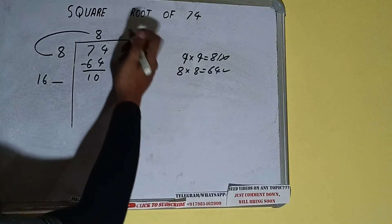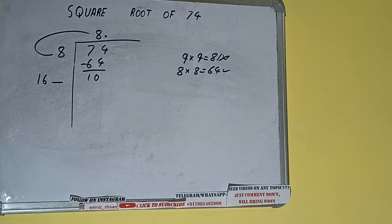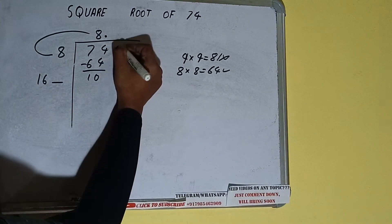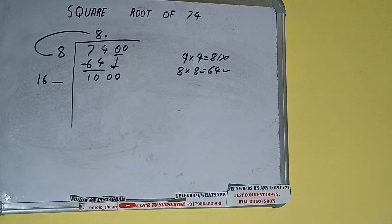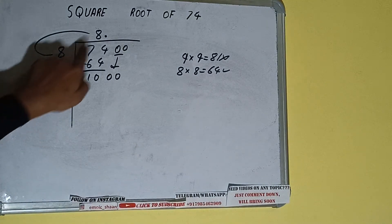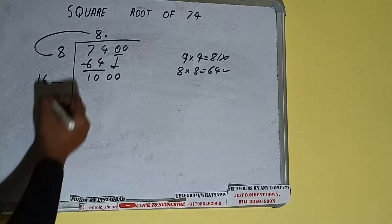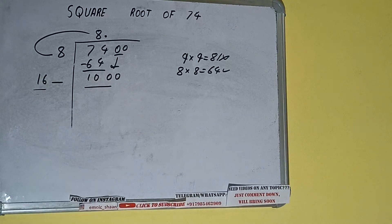And this number we need to make it big. But we don't have more pairs so we will put decimal. Once I put decimal, we can bring pair of zeros down and number will be 1000. Now whatever number we write here, we have to write here also.